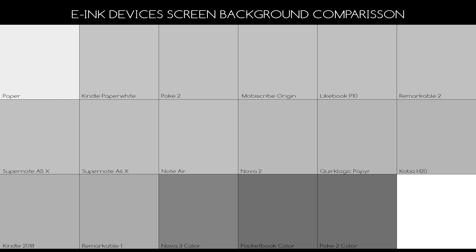Then we have the Nova 2 and QuirkLogic paper a little bit darker. We also get a bit more dark with the Kobo H2O and the cheap Kindle that I really dislike. And surprisingly, outside the normal range of devices, the Remarkable 1 is actually the darkest. These differences are very, very small but they are there. The difference between the Remarkable 1 and 2 is negligible to the naked eye, but in the controlled examination the Remarkable 1 is actually considerably darker than the Remarkable 2. Go figure.